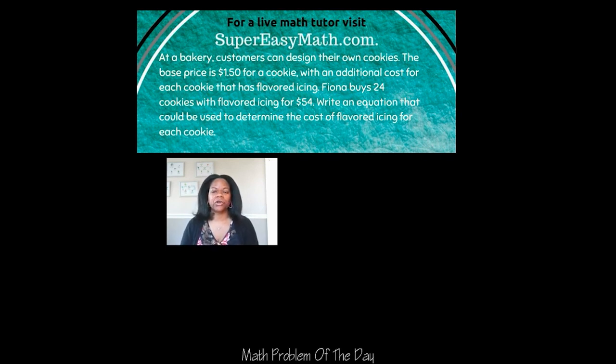at a bakery, customers can design their own cookies. The base price is $1.50 for a cookie with an additional cost for each cookie that has flavored icing. Fiona buys 24 cookies with flavored icing for $54. Write an equation that could be used to determine the cost of flavored icing for each cookie.